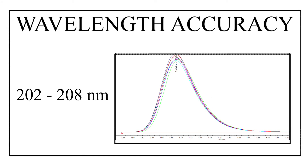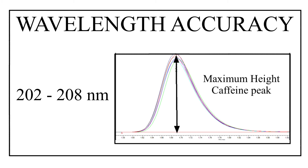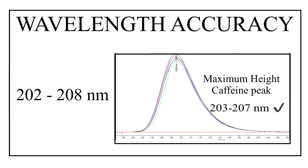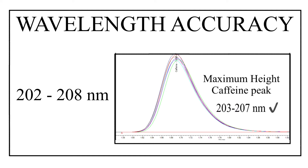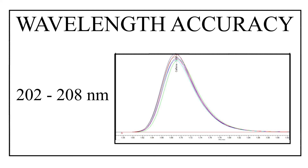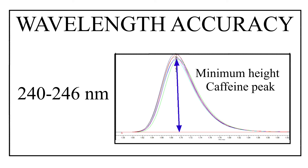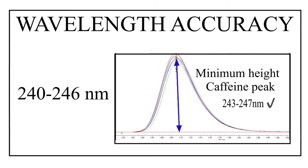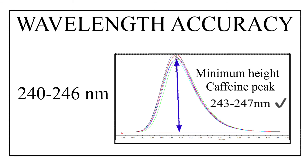Chromatograms obtained from 202 to 208 nanometers are checked for the caffeine peak with the maximum height — it should be between 203 and 207 nanometers. If you get a caffeine peak with maximum height in that range, the test is considered pass for the first set. For the second set, chromatograms from 240 to 246 nanometers are checked for the caffeine peak with minimum height — it should be between 243 and 247 nanometers. If so, the test is considered pass for the second set.